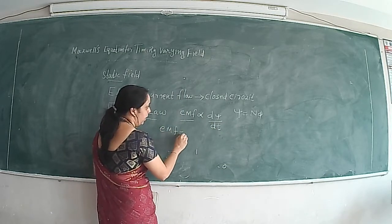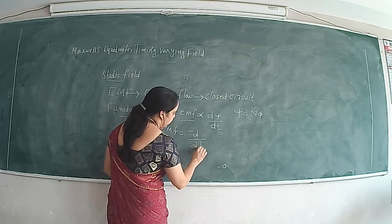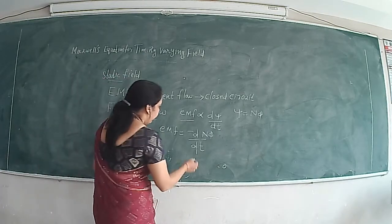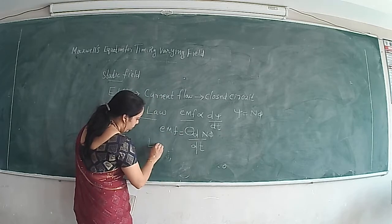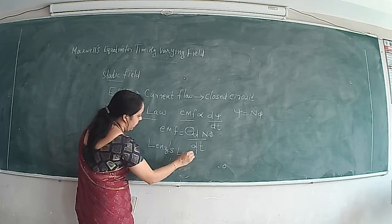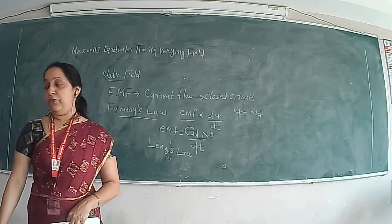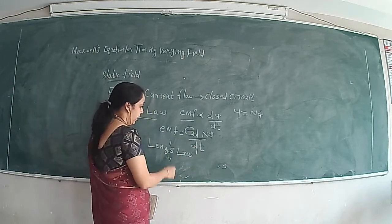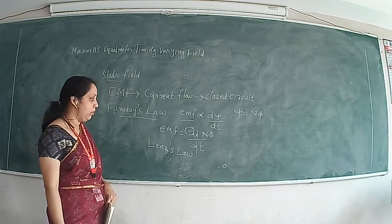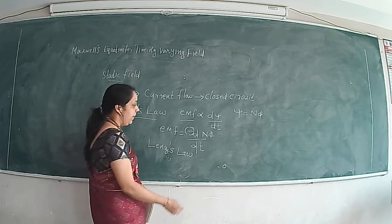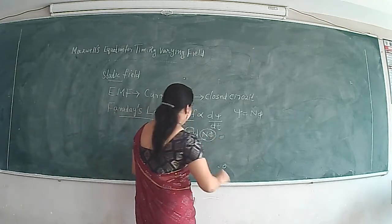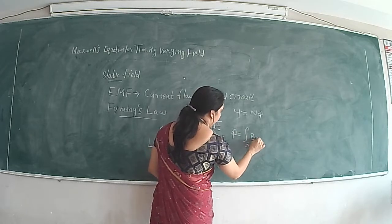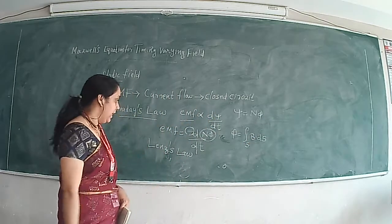If we substitute this equation, EMF will be equal to the rate of change of flux linkage, where psi is replaced with N·phi. The minus sign is related to Lenz's law. As per Lenz's law, the induced EMF will be opposing the cause producing it. So as per Faraday's law, EMF is proportional to minus d/dt of N·phi, that is flux linkage. From magnetostatics, we can write phi is equal to the surface integral of B·dS.